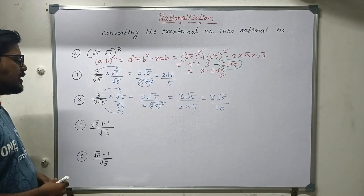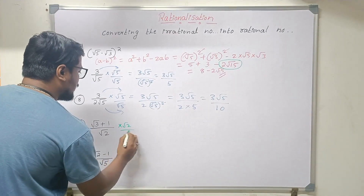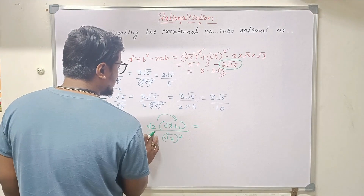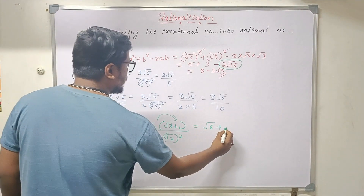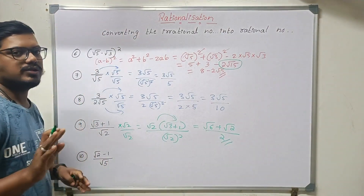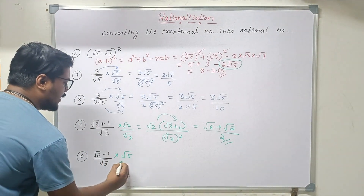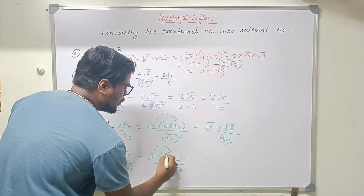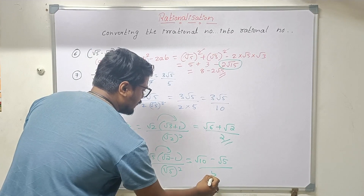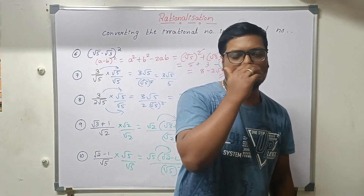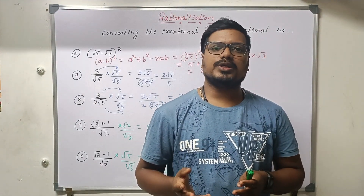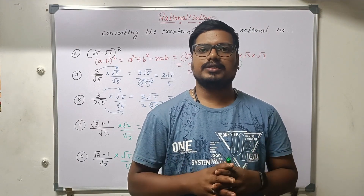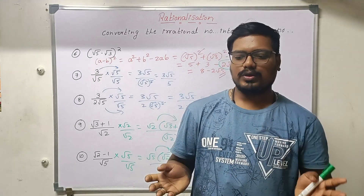For a binomial denominator, multiply root 2 over root 2 to get root 2 into root 3 plus 1 divided by root 2 whole square. Using distributive property, root 2 into root 3 is root 6, plus root 2 into 1 is root 2, all divided by 2. Similarly for root 5, we get root 10 minus root 5 divided by 5. You can keep watching all other videos and comment your doubts in the channel. Thank you all.